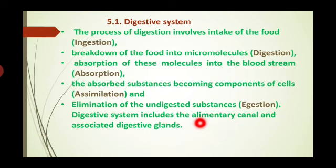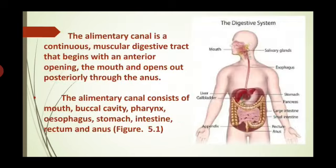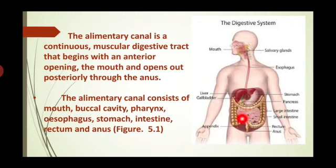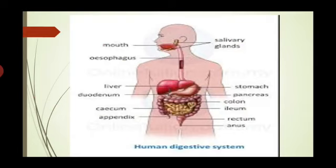The digestive system includes the alimentary canal and associated digestive glands. The alimentary canal is a long, continuous, muscular tube beginning at the mouth and opening at the anus. It consists of the mouth, buccal cavity, pharynx, esophagus, stomach, intestine, rectum and anus.